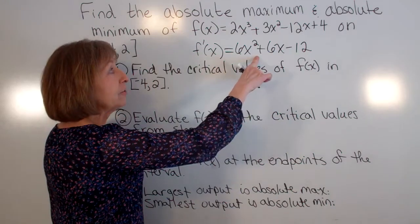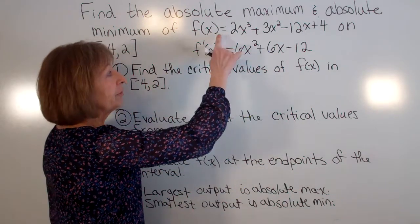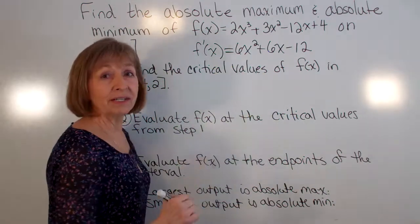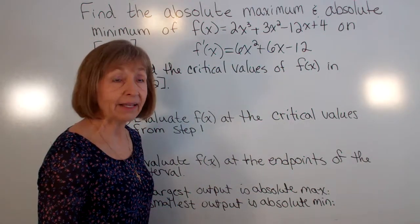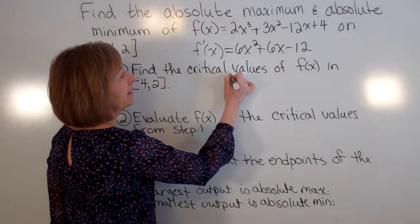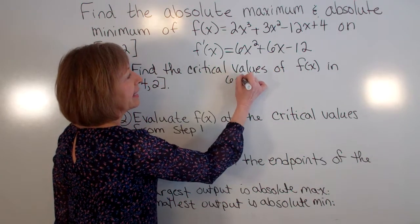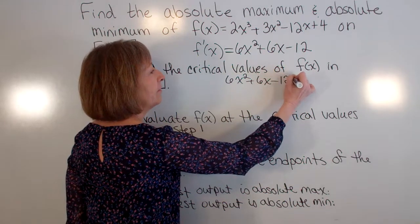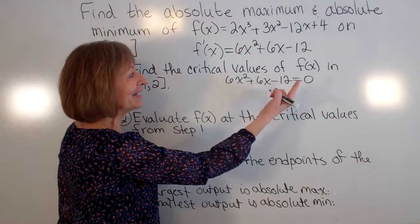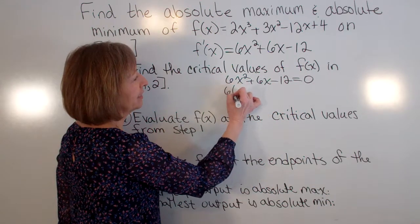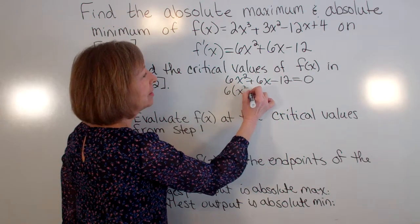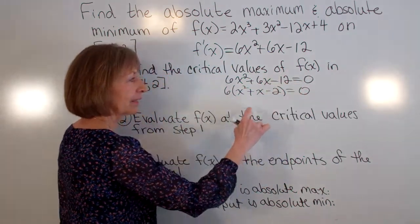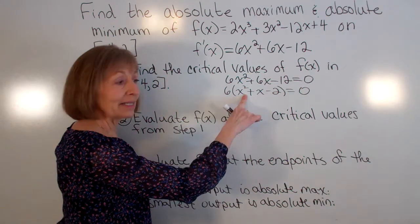So values in the domain of the original function for which this derivative is zero or undefined. Well this derivative is not undefined for any values of x but it's zero when 6x² + 6x - 12 = 0. There's a common factor of 6 that I can factor out of this. So 6(x² + x - 2) = 0.